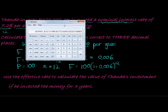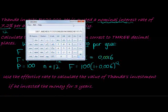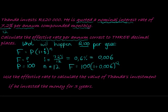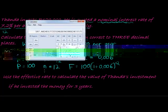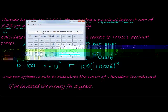So we have 100 times (1 + 0.006) to the power of 12, and there we go: 107.44. We must round to three decimal places.